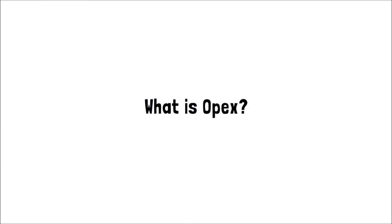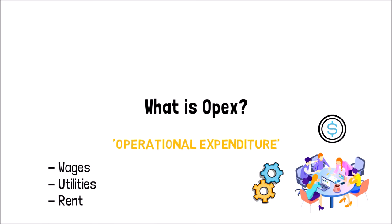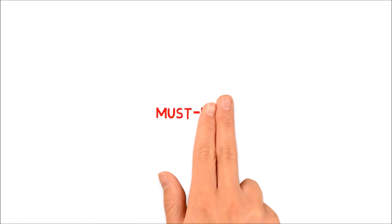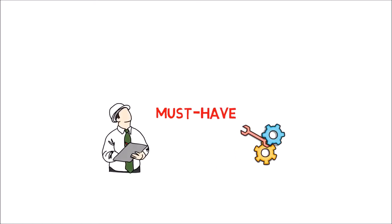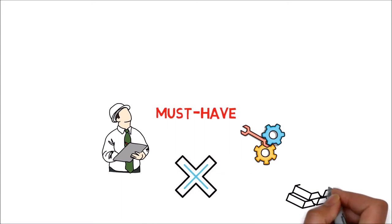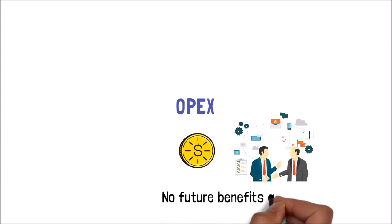What is OPEX? OPEX stands for operational expenditure, which refers to expenditure a business makes in its regular operations. Wages, utilities, and rent are examples of operational costs that do not provide future benefits — rather, they are an immediate necessity. Building maintenance and general repairs are included in operating costs, provided no improvements are made that affect the asset's performance or lifespan. It is crucial to consider OPEX, as it accurately reflects the ongoing expenses of running a business.